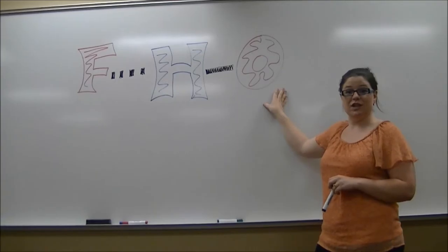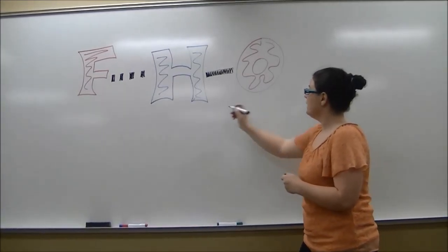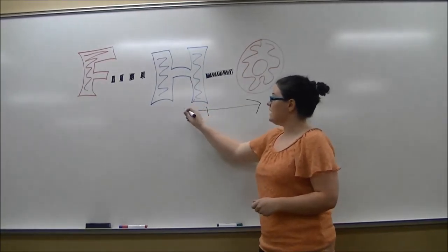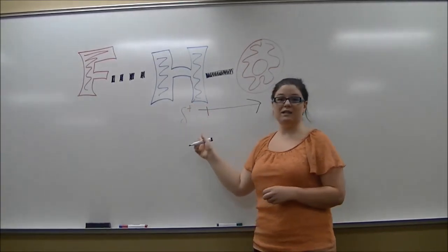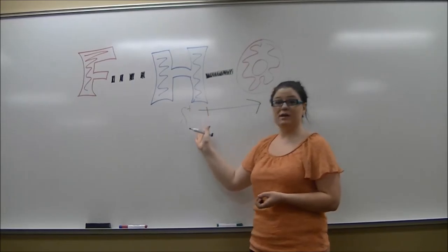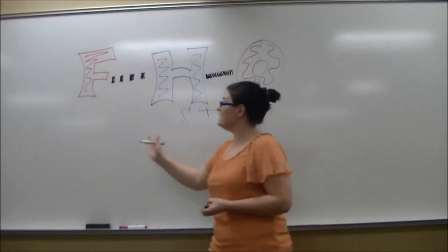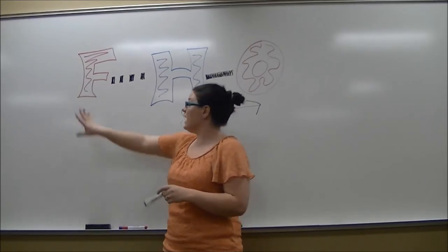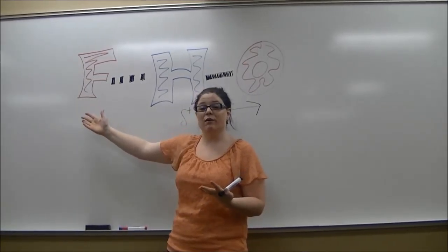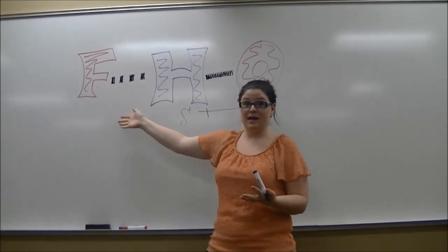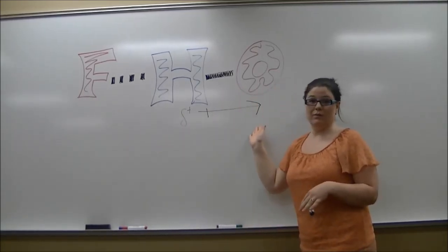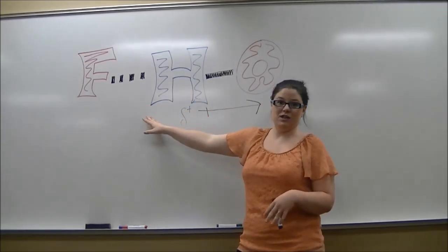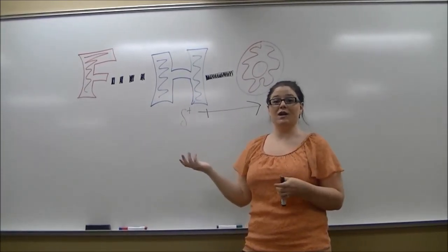This partially positive hydrogen is attracted to a very electronegative fluorine atom. This fluorine atom is what we consider the hydrogen bond acceptor, because it's accepting the hydrogen. This oxygen is what we would call the hydrogen bond donor, because it's donating the hydrogen to form the intermolecular interaction with the fluorine.